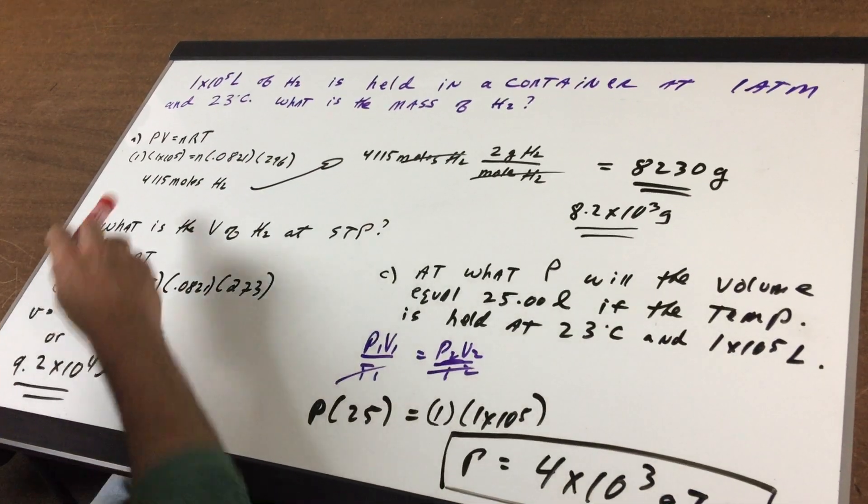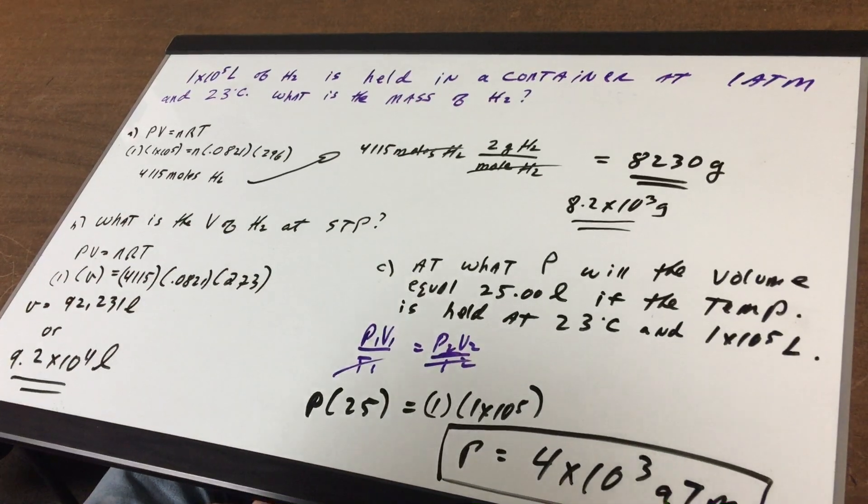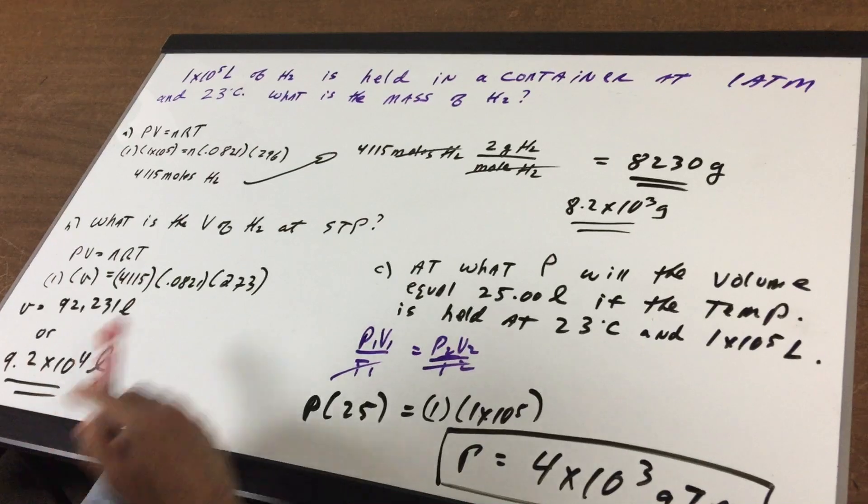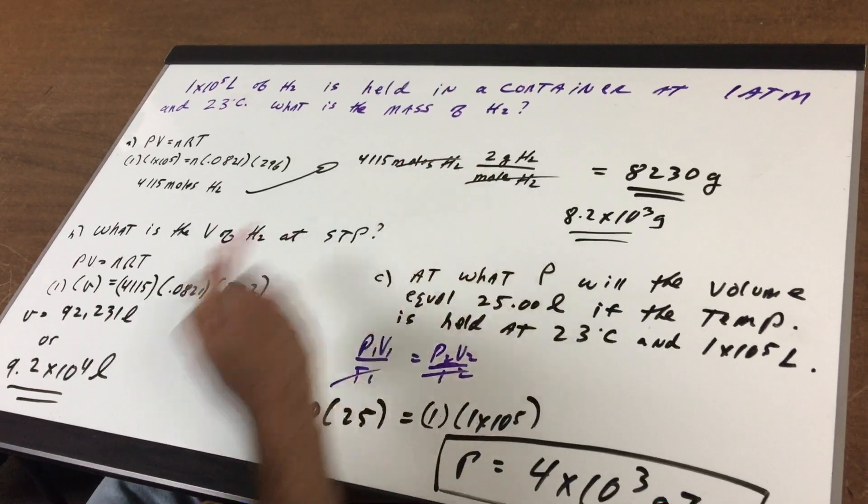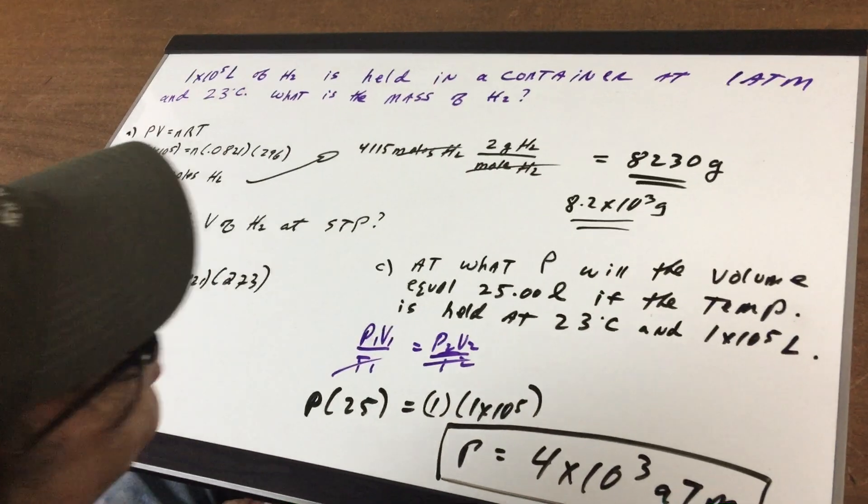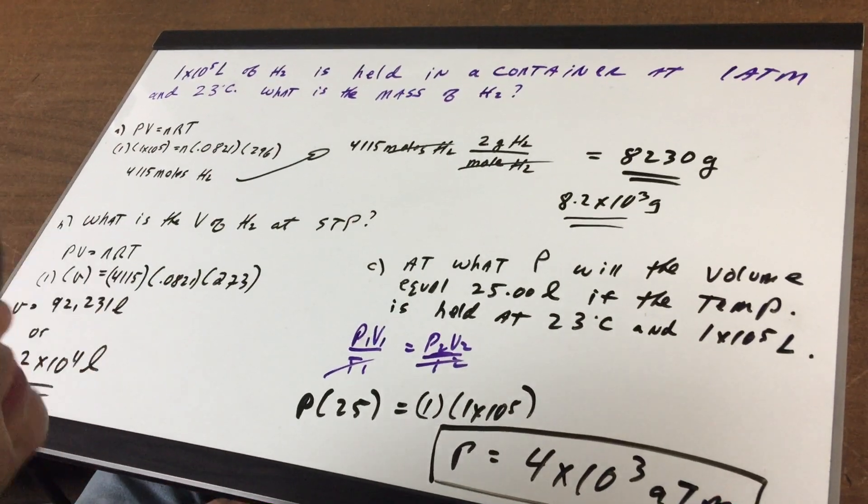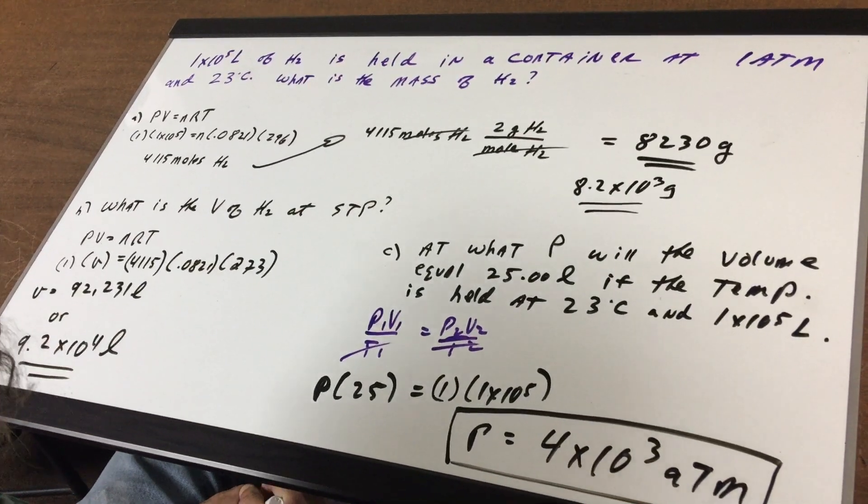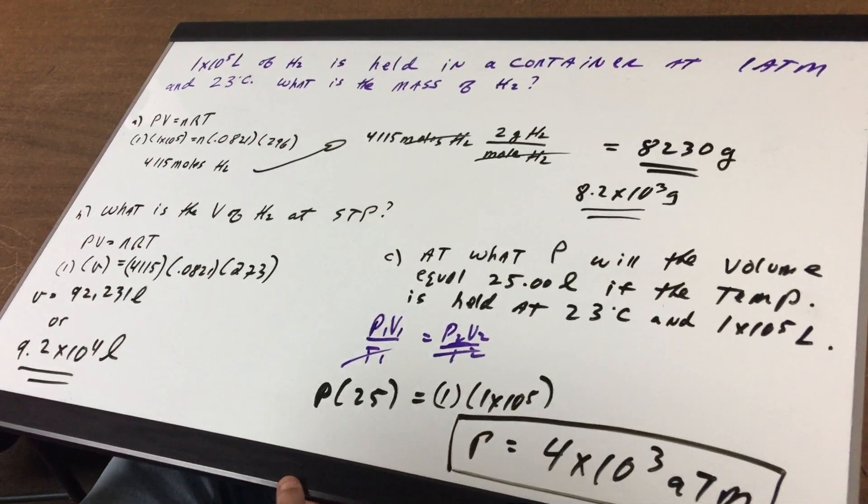I know the numbers aren't so nice, but we get 4,115 moles of hydrogen. And all I simply do is to convert moles of hydrogen into grams and I get 8,230 grams, which is approximately 8.2 times 10 to the third grams. So that's simple enough. You should be able to hit a question like that with ease.